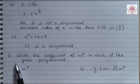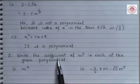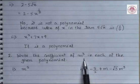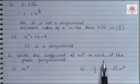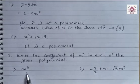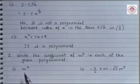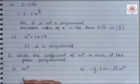Now we will solve question number 2: write the coefficient of m cube in each of the given polynomial. The first one is m cube. The number multiplied to m cube here is 1, so its coefficient is 1.